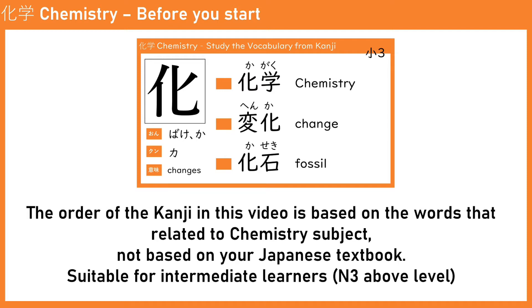most of the easy kanji comes first and then the harder ones come at N3, N2, N1. But in this video, I would like to put the order based on the chemistry subject itself. For example, in the Japanese chemistry curriculum we start with atoms, then chemical reactions, then oxidation, electrochemistry, and so on, and we move on to organic chemistry and inorganic chemistry.